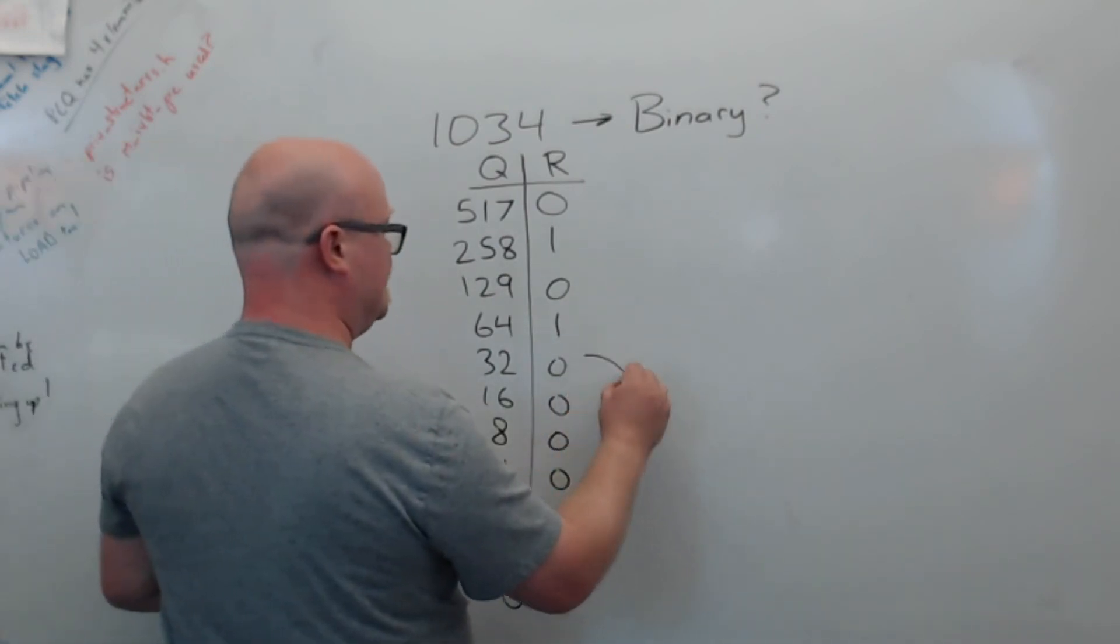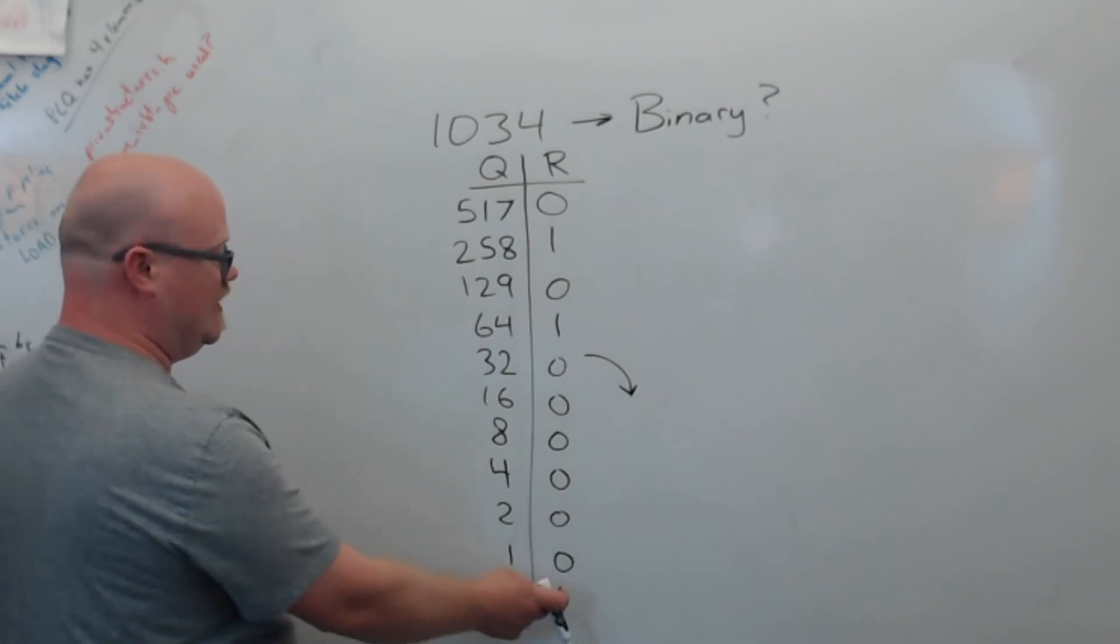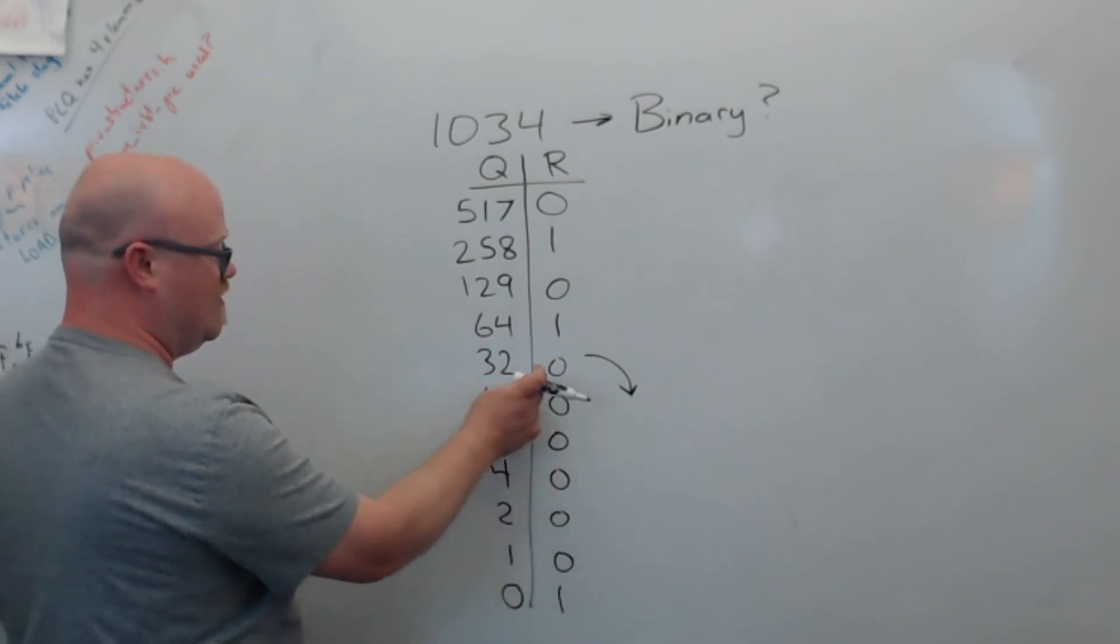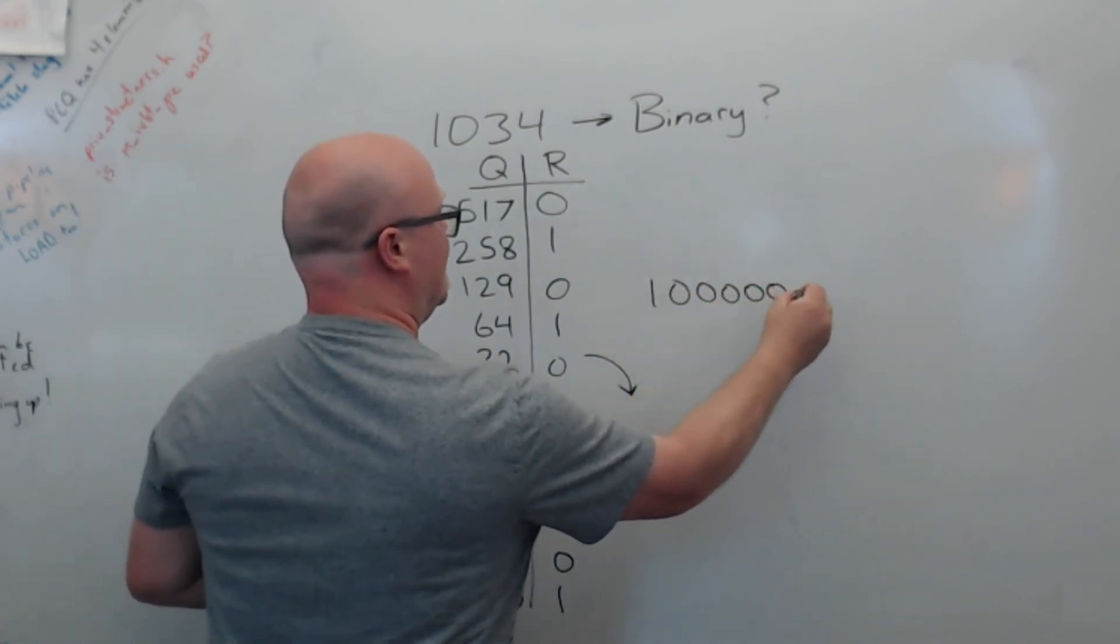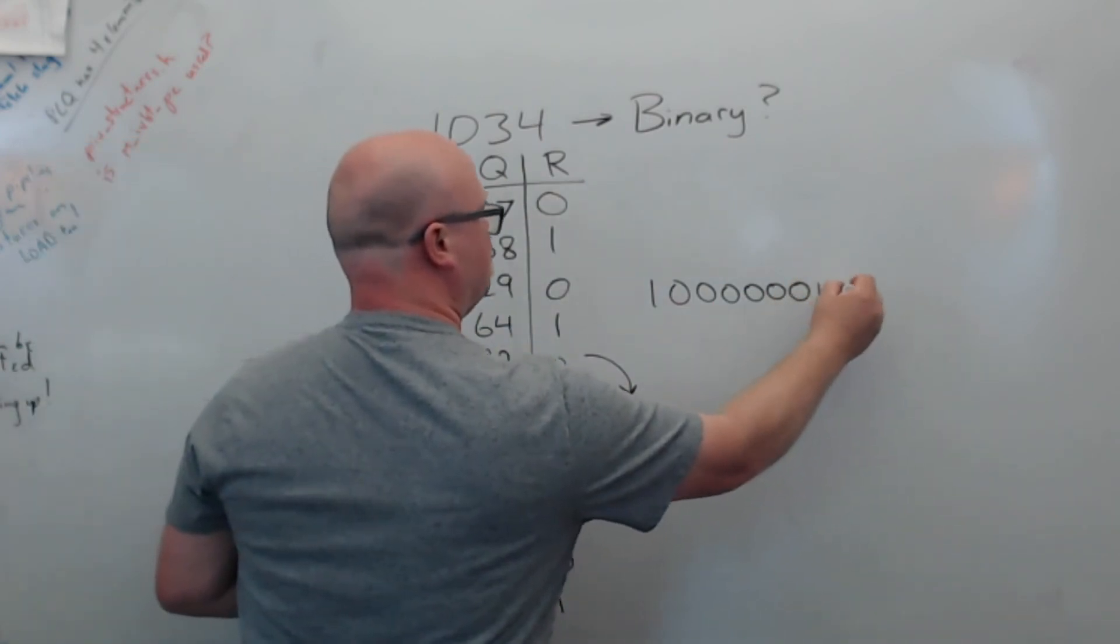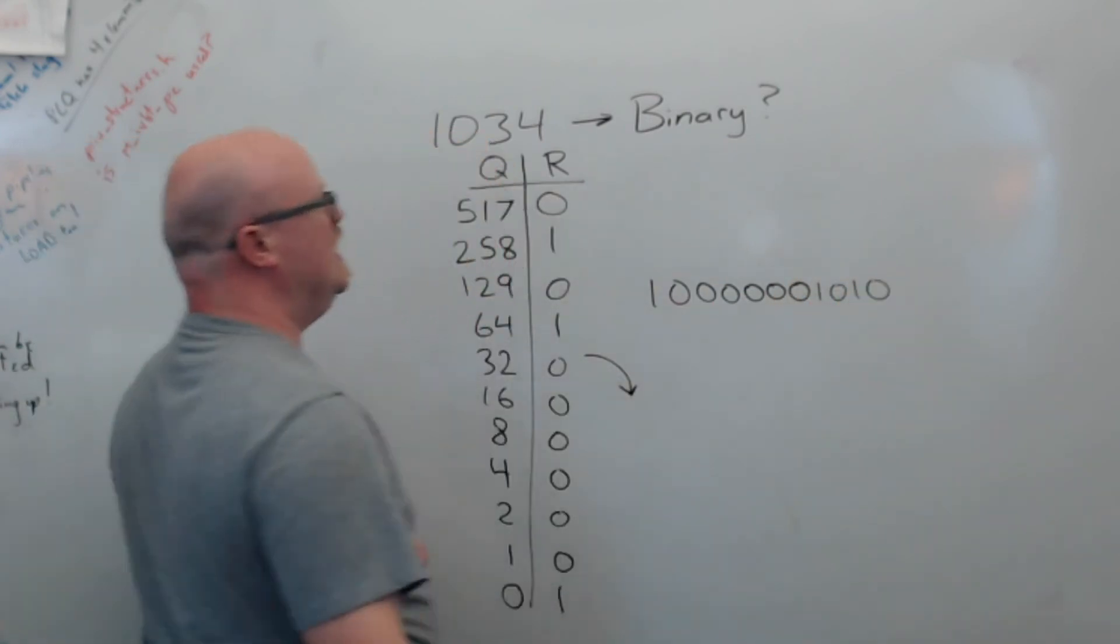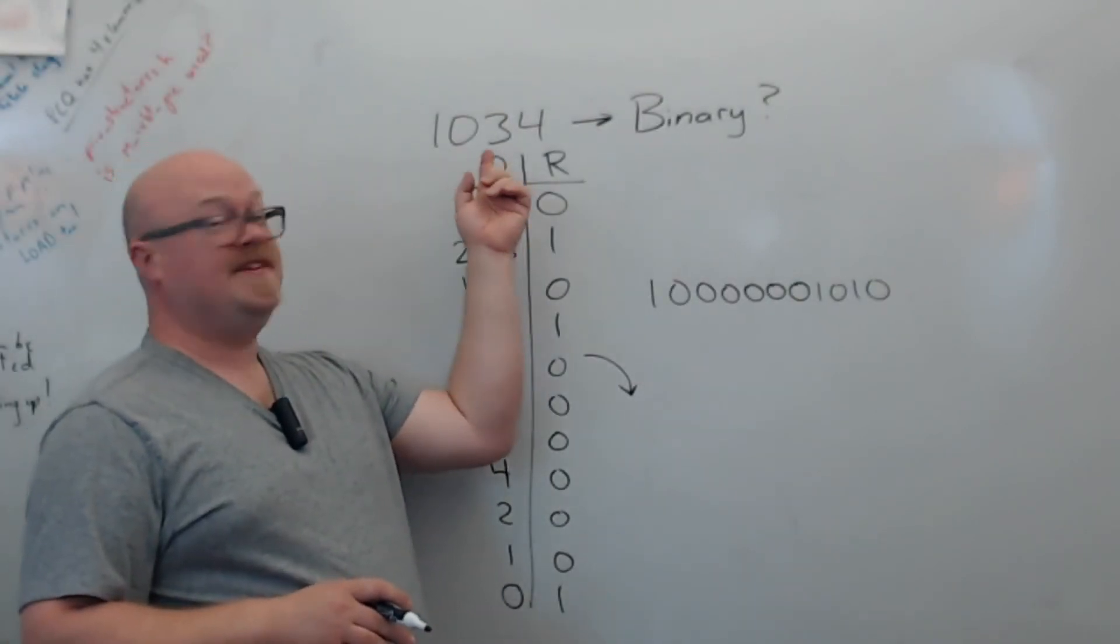And then this falls over in that direction. So we have 1 and then 1, 2, 3, 4, 5, 6 zeros. 1, 2, 3, 4, 5, 6 zeros. And 1, 0, 1, 0. And that should be the binary equivalent to 1,034.